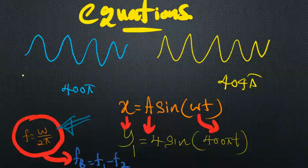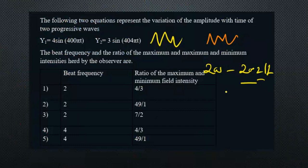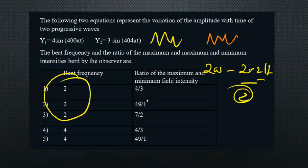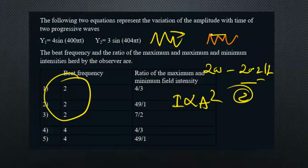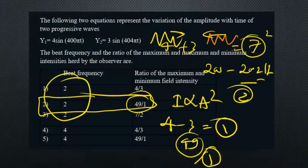For the second wave, 404π divided by 2π gives 202 Hz. The beat frequency is the difference: 202 − 200 = 2 Hz. For the intensity ratio, intensity is proportional to amplitude squared. In constructive interference, the amplitudes add: 4 + 3 = 7, so maximum intensity is 7² = 49. In destructive interference: 4 − 3 = 1, so minimum intensity is 1² = 1. The ratio is 49:1, which matches the second answer.